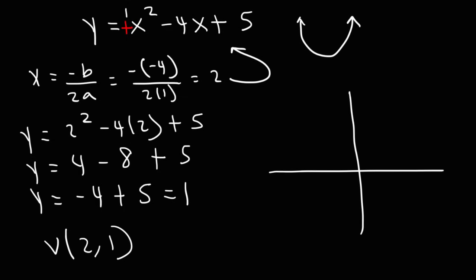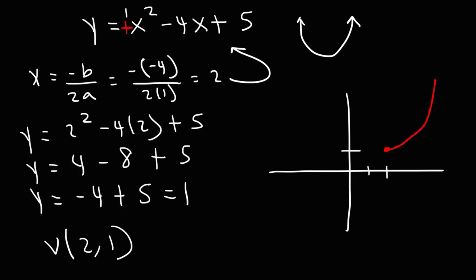Now we can draw a rough sketch. All we need to do is plot the vertex at (2, 1), and we know the parabola opens upward. So the lowest y value is 1 and the highest is infinity. The range is going to be from 1 to infinity.